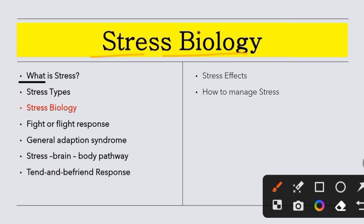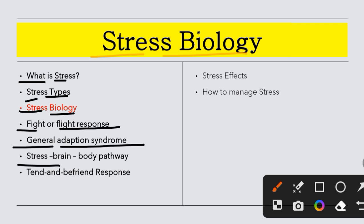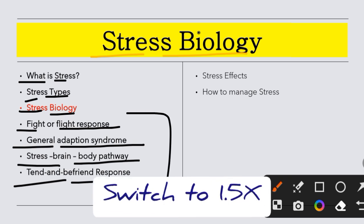First of all, we will see what is going on in stress, then we will study about stress types. We will come to stress biology and look at what happens when we respond to our body. Our body will come to fight and flight response, general adaptation syndrome, stress brain-body pathway, and tend and befriend response. We will study all these things.